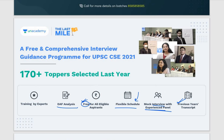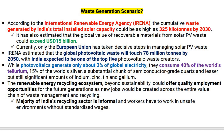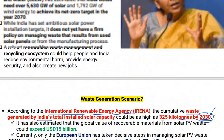Currently, regarding the waste generation scenario in India, as per the report of the International Renewable Energy Agency — established in 1987 — the cumulative waste generated by India could be as high as 325 kilotons by 2030. Globally it could exceed 15 billion US dollars. Currently only the European Union is taking decisions to manage this waste, which is why we are talking about switching to a circular economy and solar waste management.